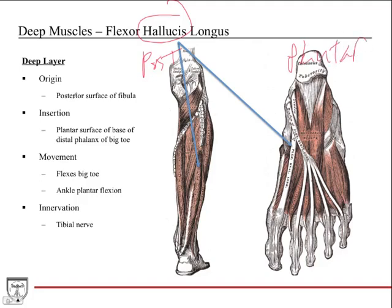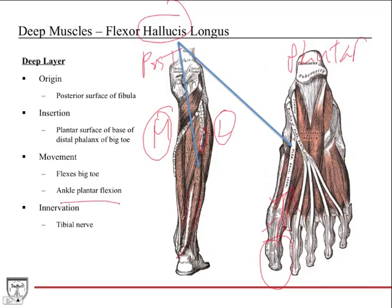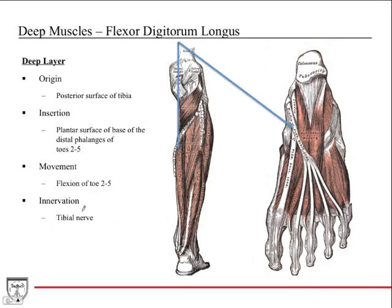Flexor hallucis longus — hallucis meaning big toe — is the second deep layer muscle. It originates from the posterior surface of the fibula. The muscle belly comes down, wraps around the ankle, travels on the plantar surface, and attaches to the plantar surface of the base of the distal phalanx of the big toe. It flexes the big toe, and it also crosses the ankle joint to assist with ankle plantar flexion. Innervation is the tibial nerve.